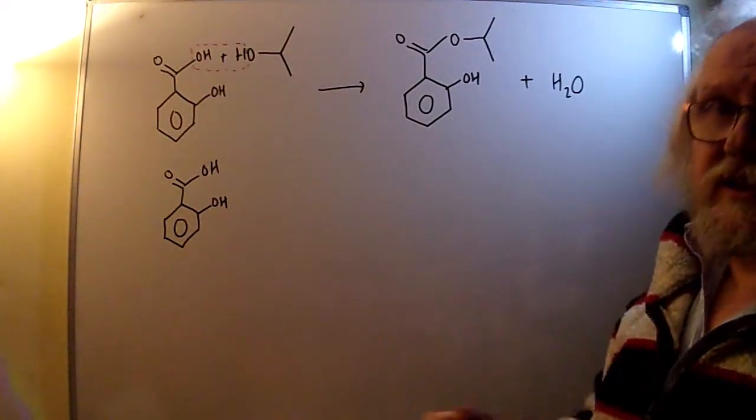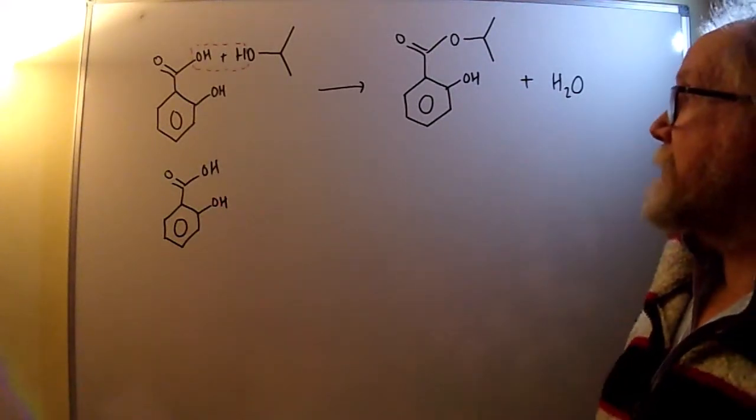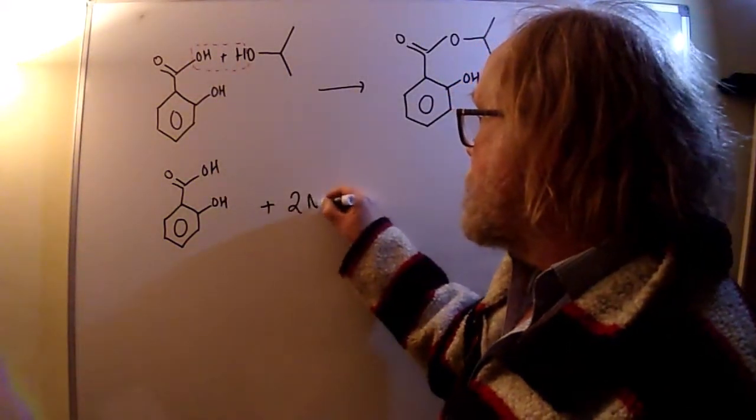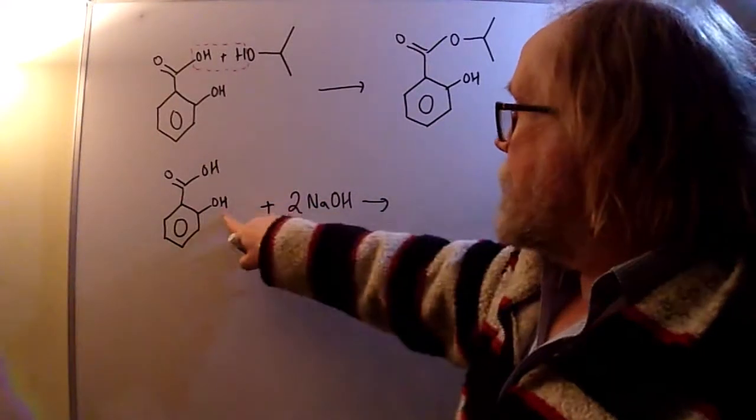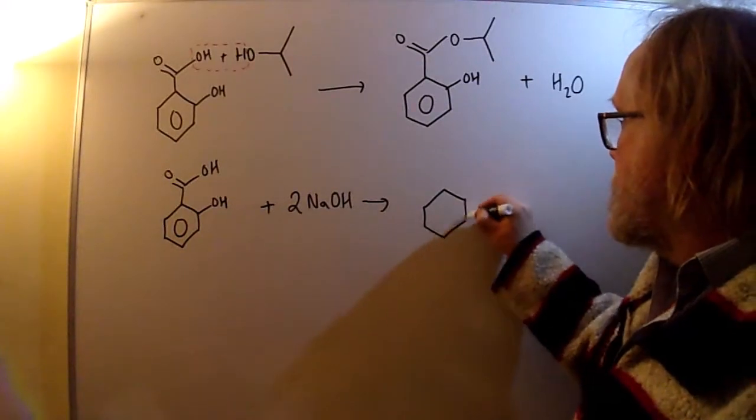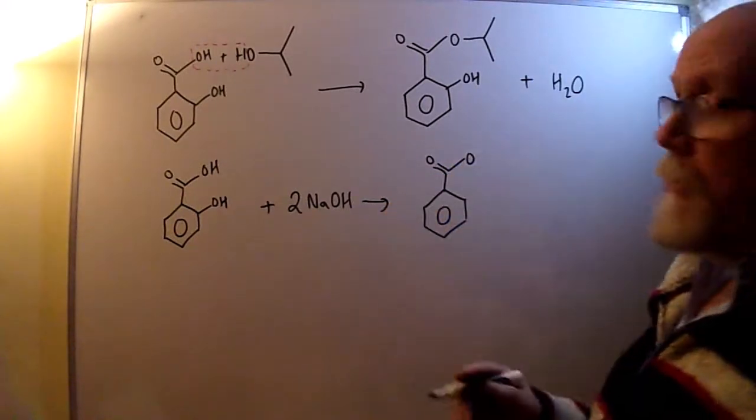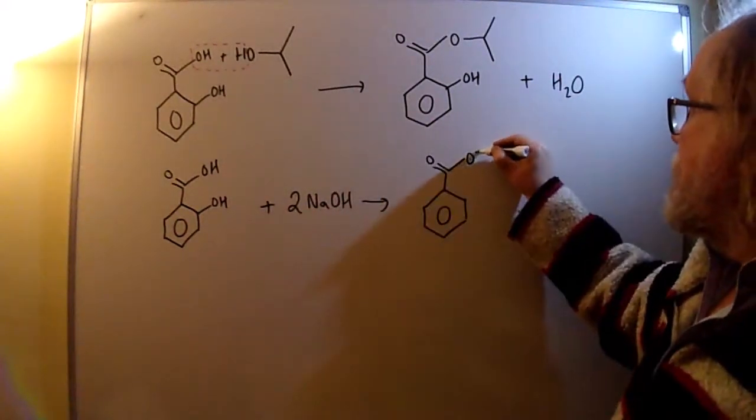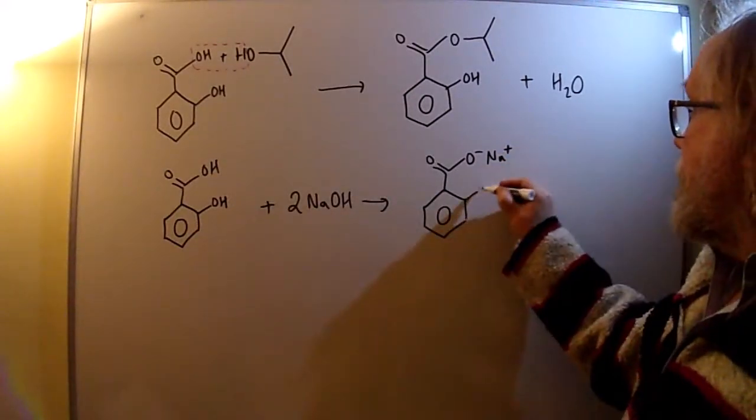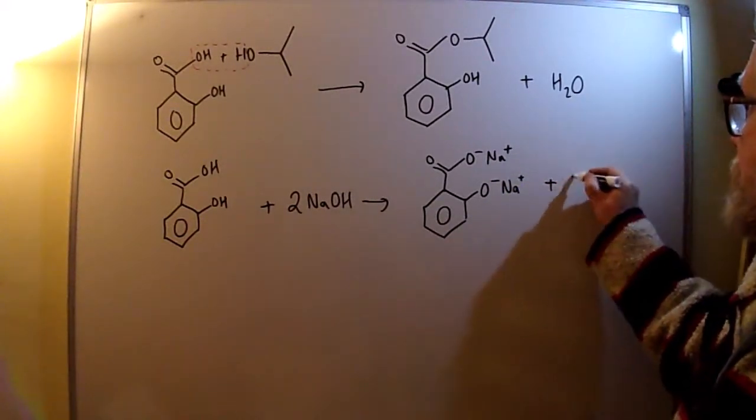But you have to remember that phenols are also weakly acidic, and so they can also react in the same kind of way, just as an acid-base reaction with sodium hydroxide. So we're going to need two moles of sodium hydroxide - one for the phenol, one for the carboxylic acid. And you simply form the salt. When you form the salt, you just replace the H+ with the metal ion. So we're going to get O- Na+ for the sodium salt there, and the same for the sodium salt here. And each one of those produces a water, so two waters.